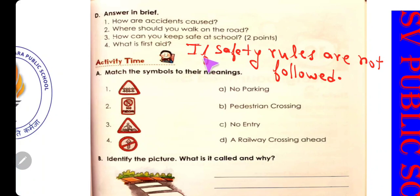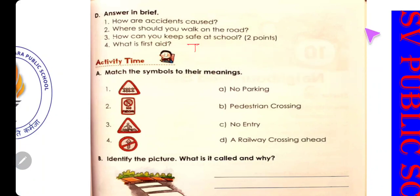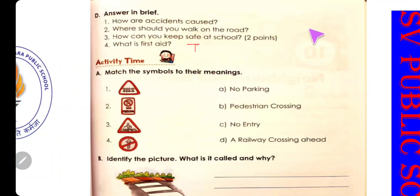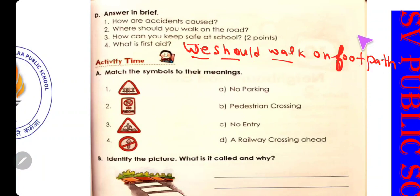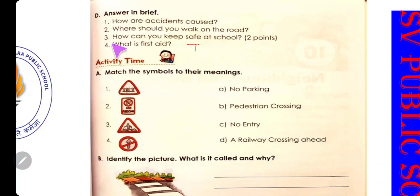Number two: Where should you walk on the road? Where मतलब कहां पे, should मतलब चाहिए। Road पे आपको कहां walk करना चाहिए? The answer is: we should walk on the footpath - F-O-O-T-P-A-T-H. We should walk on the footpath.